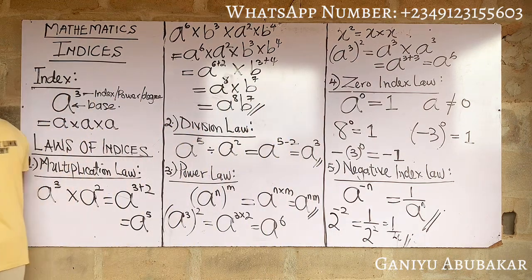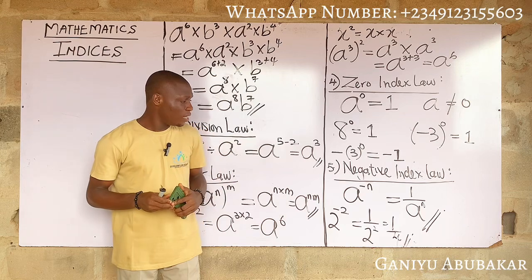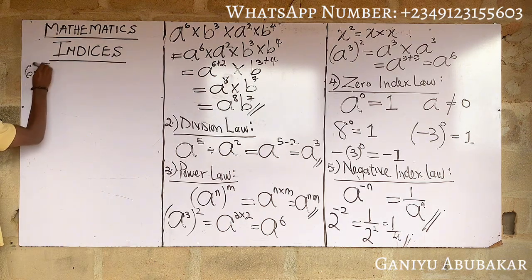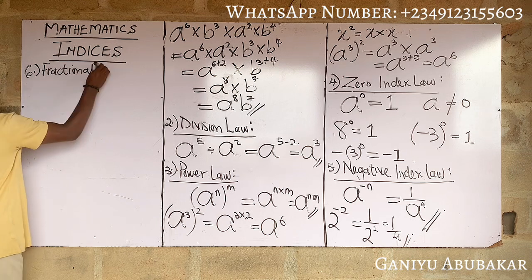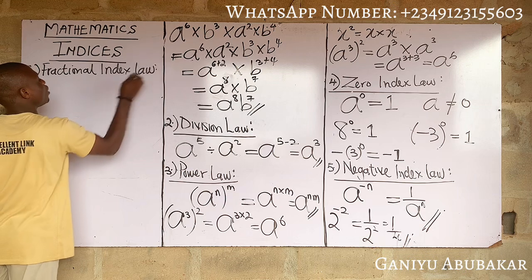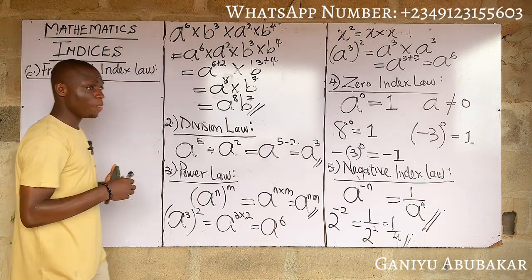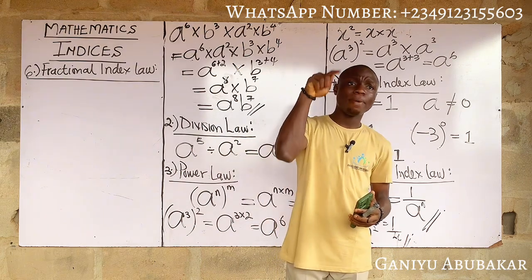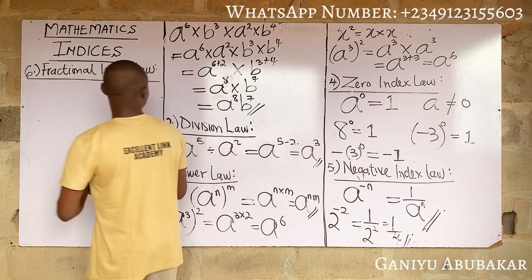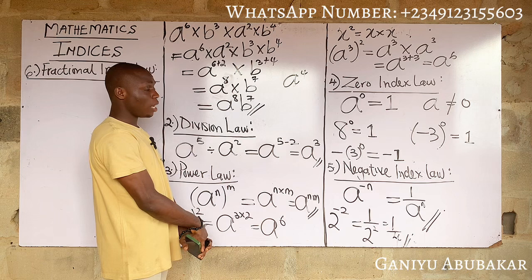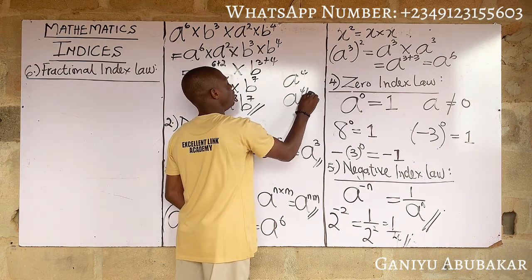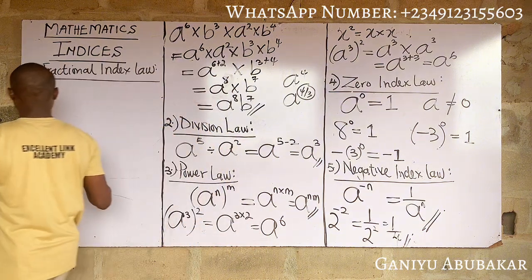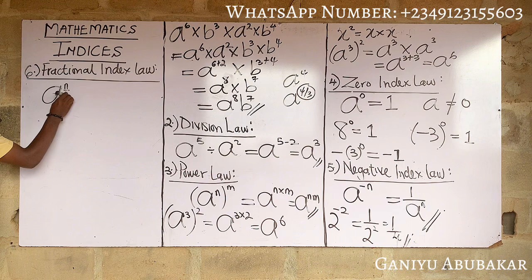Let's look at the sixth law called the Fractional Index Law. Here a base is raised to a power in fractional form. For example, a^4 is not a fractional index, but a^(4/3) is a fractional index because the power is in fractional form. In general, if I have a^(n/m), the denominator m becomes the root.